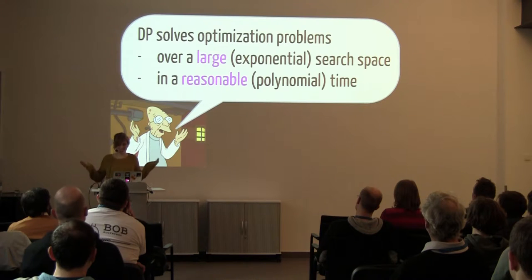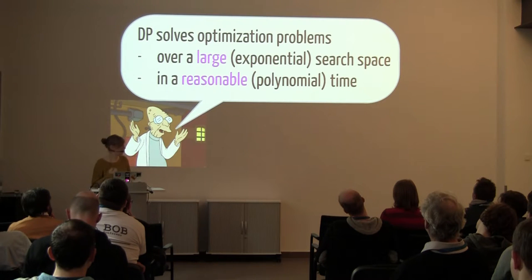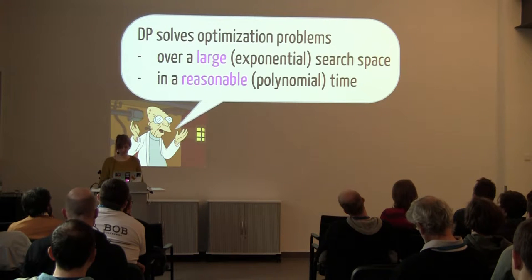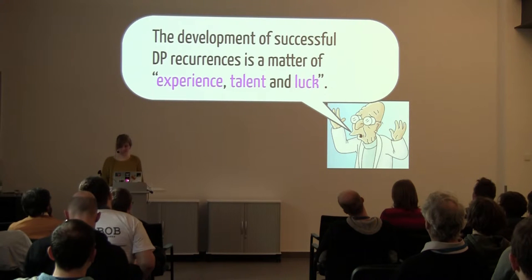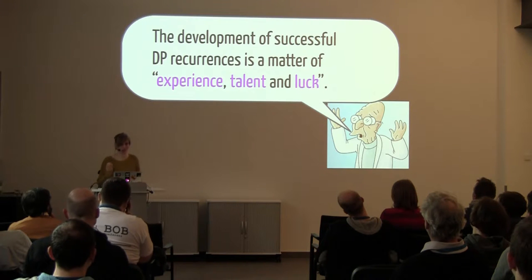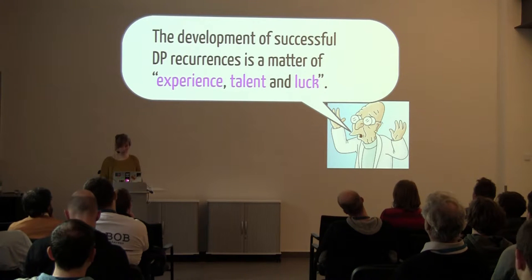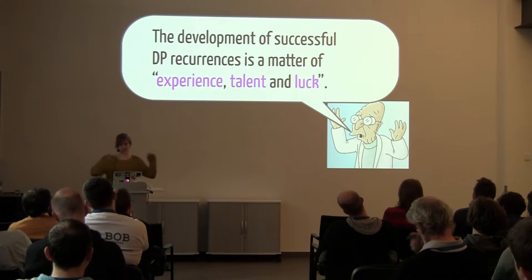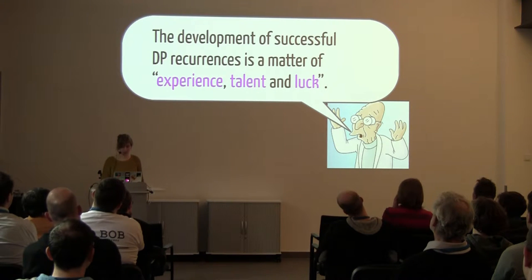Good news: dynamic programming solves optimization problems over a large — exponential — search space in a reasonable, polynomial amount of time. It's tractable by a computer. But there is a huge 'but'. The development of successful dynamic programming recurrences is a matter of experience, talent, and luck. It's really hard to get right. The table could be two-dimensional, four-dimensional, or even multi-dimensional, and then it gets very hard.